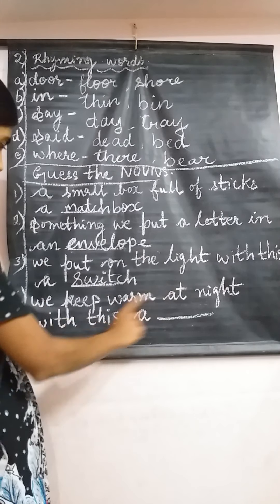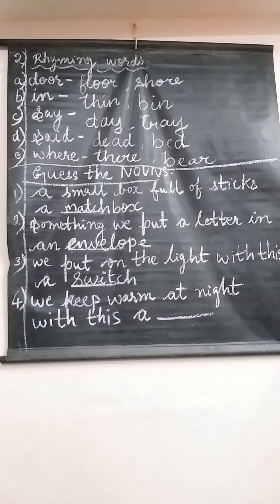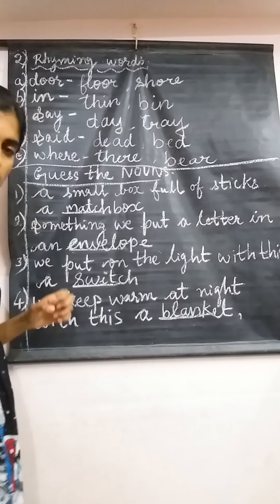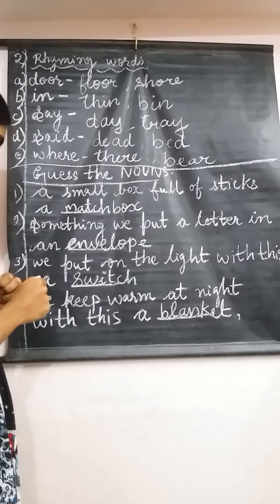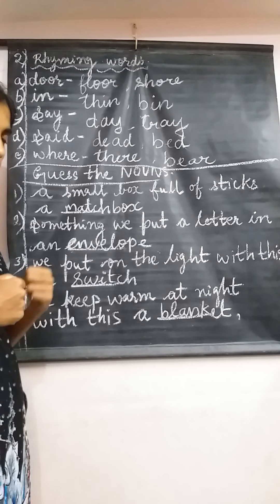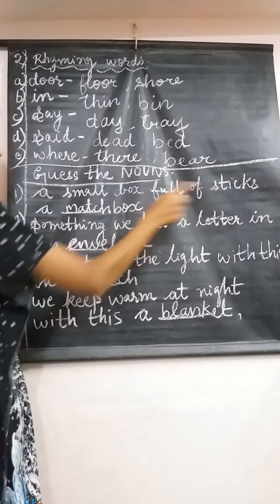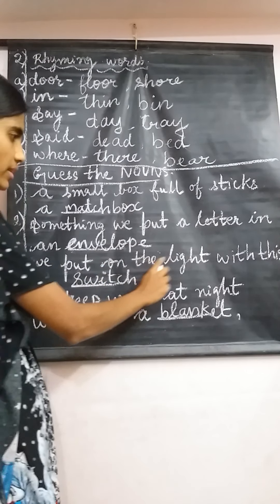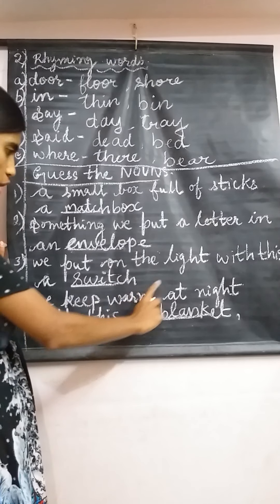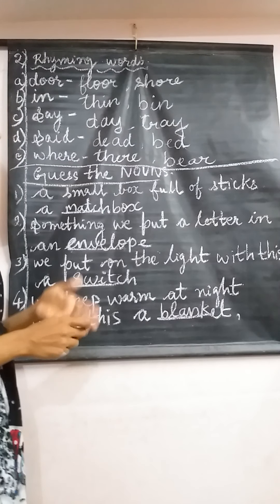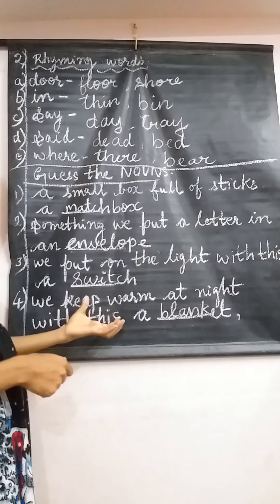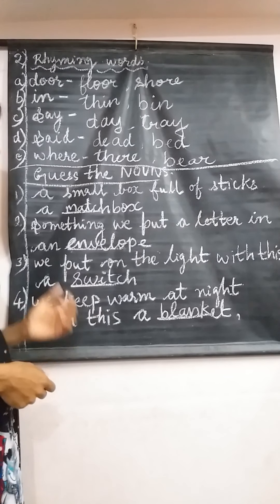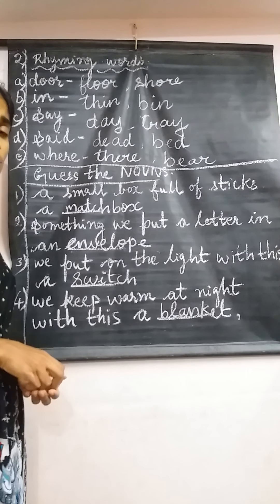Next: 'We keep warm at night with this — a dash.' What do we use to keep us warm at night? We use a blanket. So the answers are: a matchbox, an envelope, a switch, and a blanket. Today we have understood what rhyming words are and identified some nouns in fill-in-the-blanks. Copy this in your notebook and write it neatly. If you have followed this, please practice it very well. Thank you.